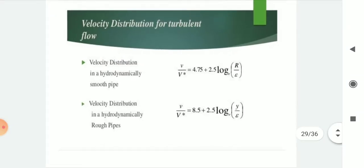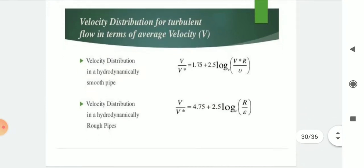Velocity distribution for turbulent flow: for a hydrodynamically smooth pipe, v/v* = 4.75 + 2.5·log_e(r/e). For rough pipes, v/v* = 8.5 + 2.5·log_e(y/e). In terms of average velocity V: for smooth pipe, V/v* = 1.75 + 2.5·log_e(r/e); for rough pipes, V/v* = 4.75 + 2.5·log_e(r/e).